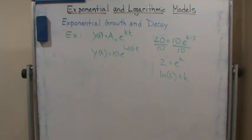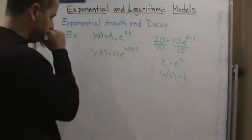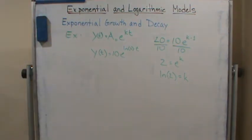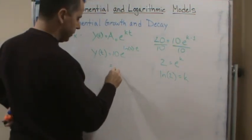Well, I know that I can change this. I could do the same thing I did before in the previous videos. So I'm going to write this as equals 10, and I'm going to break this apart and write this as e to the natural log of 2.